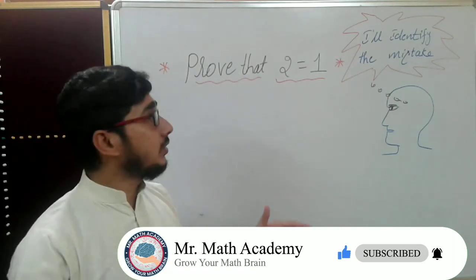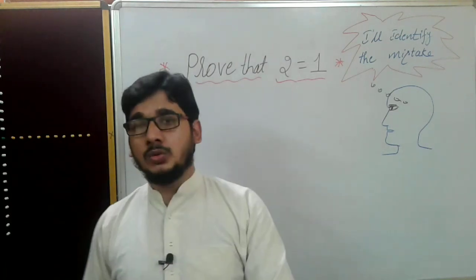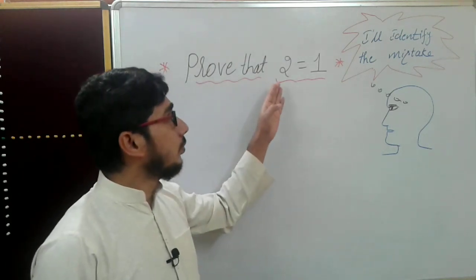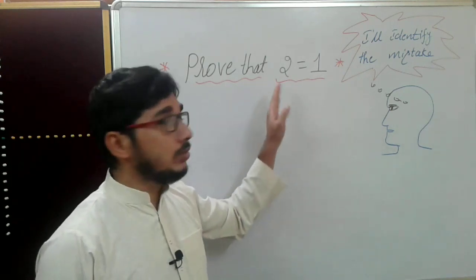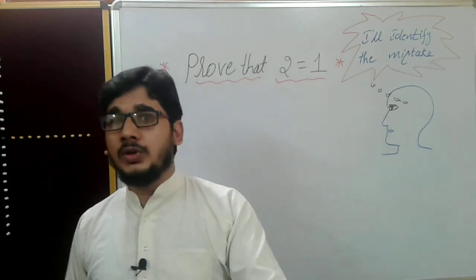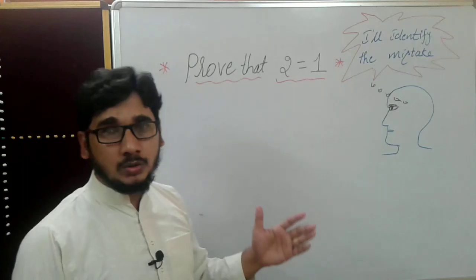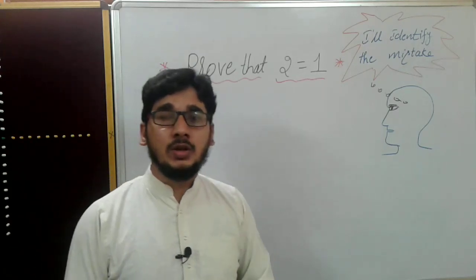One is always equal to one, two is always equal to two only. Neither two is equal to one nor one is equal to two—it will never happen. You have to prove it, but I will prove two is equal to one. You find out the error.